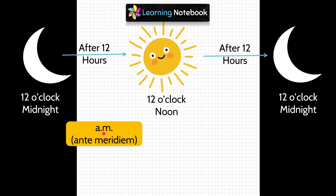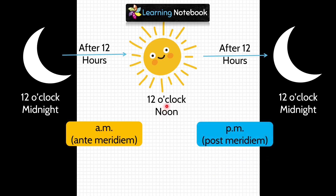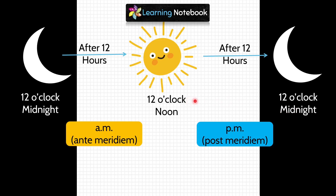We use PM, which is post meridian, for the time after 12 o'clock noon and before 12 o'clock midnight. Any time which falls after 12 o'clock noon but before 12 o'clock midnight is denoted by PM.